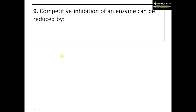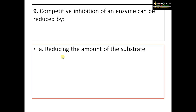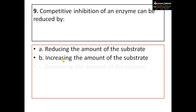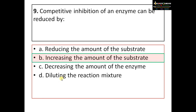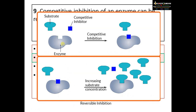Question number nine: competitive inhibition of an enzyme can be reduced by — options: A) reducing the amount of substrate, B) increasing the amount of substrate, C) decreasing the amount of enzyme, D) diluting the reaction mixture. The correct answer is B. A competitive inhibitor has a shape analogous to the substrate and competes for the enzyme's active site. If substrate concentration is increased, the competitor cannot effectively bind to the active site, thereby nullifying or reducing competitive inhibition.